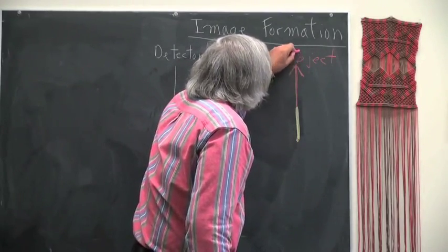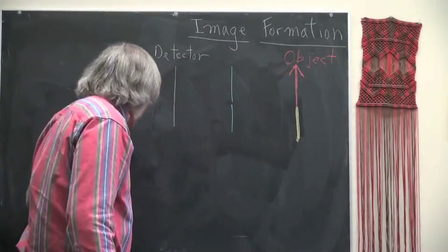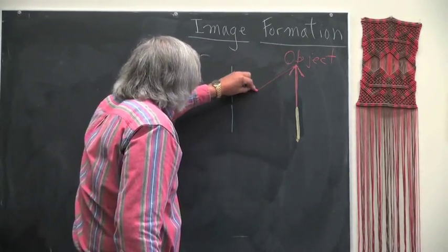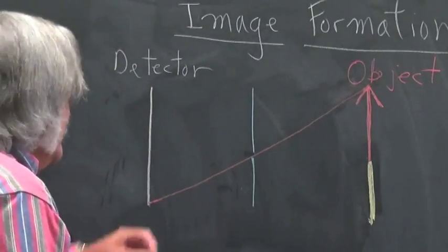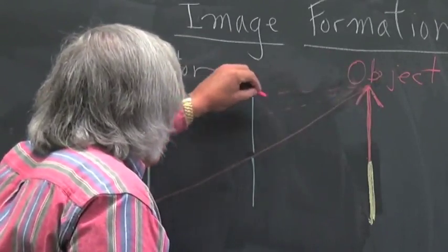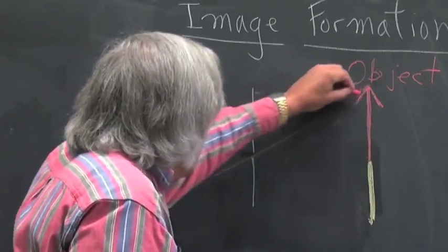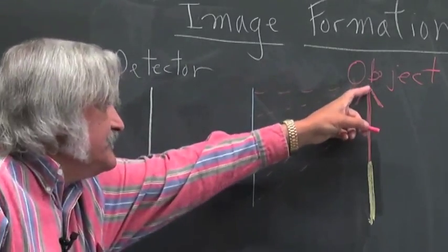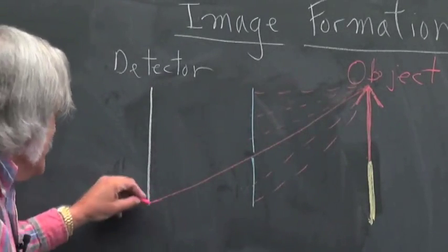Here's our object. And now look and see what happens to the arrow tip. The arrow tip light can come through the hole in the pinhole. And now you see that all the other rays of light coming from the tip of the arrow are blocked.